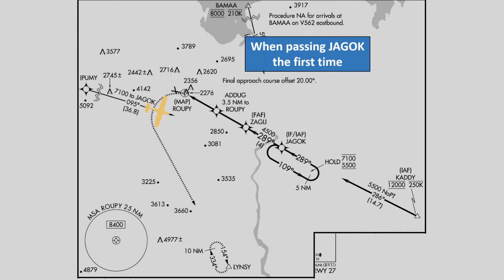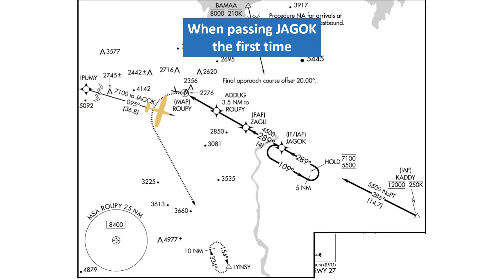We have to wait until at least the first crossing of JAGOK to descend. Once there, we begin the course reversal and can go down to 5500 feet. Passing JAGOK the second time and being established inbound, we can then go down to 4500 until ZAGLY, which is the final approach fix.